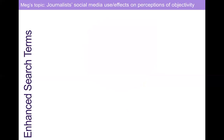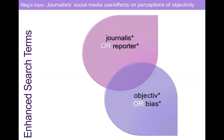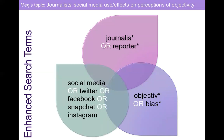So we're going to enhance the search terms. I came up with journalist or reporter and objective or bias. The asterisk expands terms — so journalist or journalism, objective or objectivity or objectively, bias or biases. That's expanding out from just journalists. And with social media, they're not exactly the same thing, but social media, Twitter, Facebook, Snapchat, Instagram — for our purposes, they're similar enough. We're going to use those synonymously, and this search gets about 450 results.